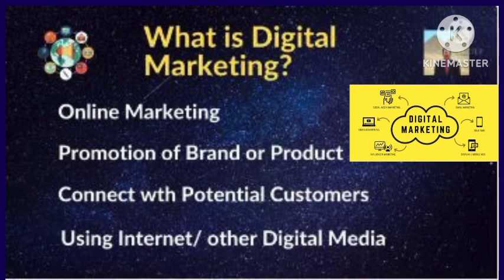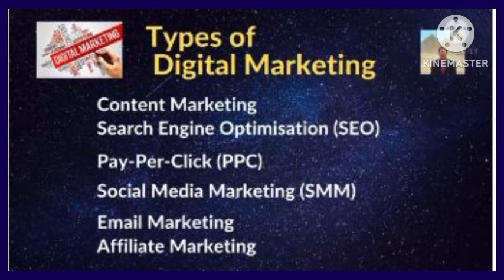Now what are the types of digital marketing? It is content marketing. It could be search engine optimization SEO, pay per click PPC, social media marketing SMM, email marketing, and affiliate marketing.